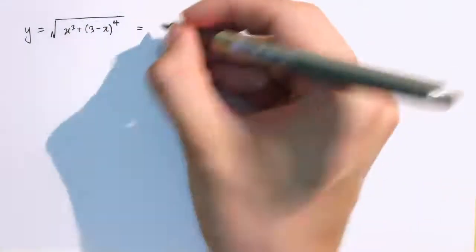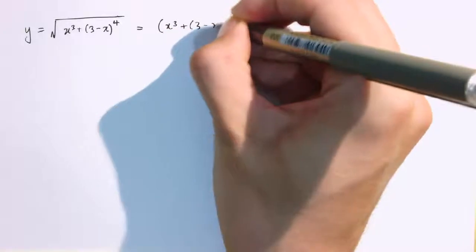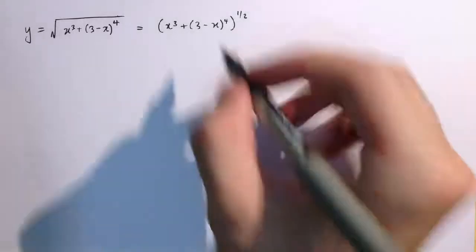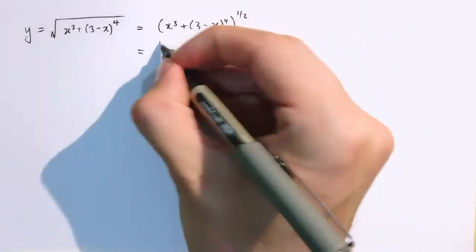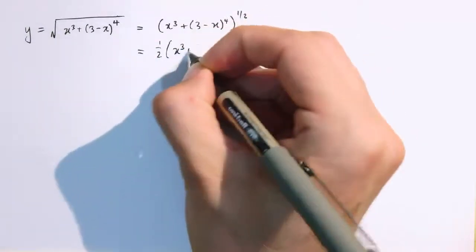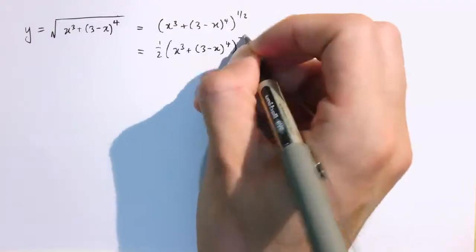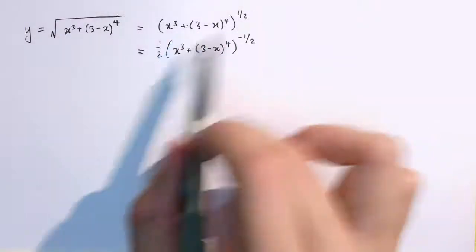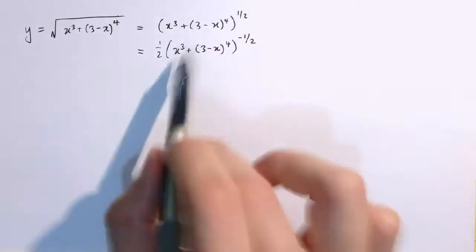First, I notice that the outside function is the square root, which I could also write as to the power of 1 half. So if I differentiate the outside function first, I'm going to get 1 half times x cubed plus 3 minus x to the 4, all to the minus 1 half. The derivative of x to the half is 1 half x to the minus 1 half, and we've just got this in here.